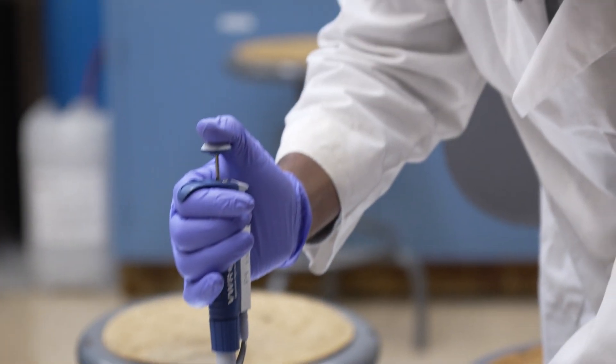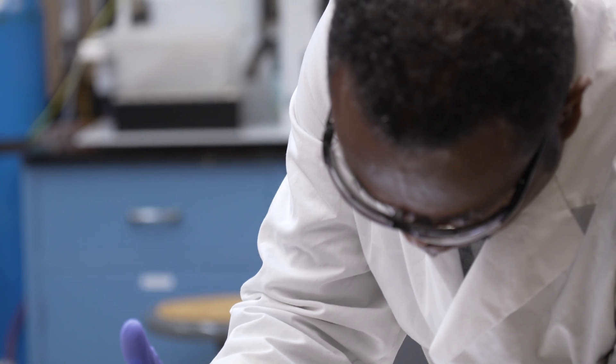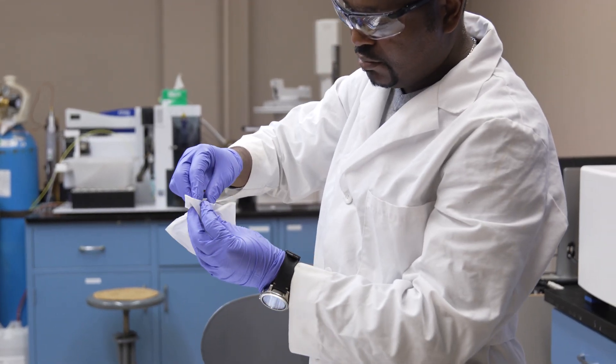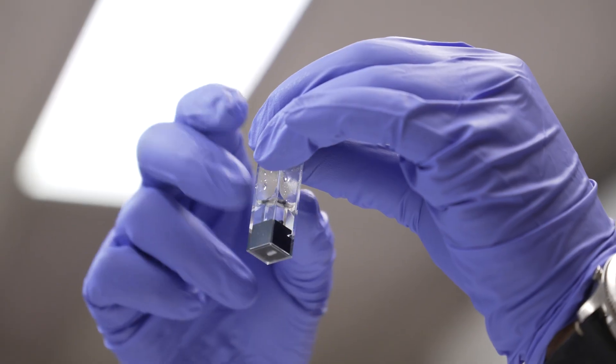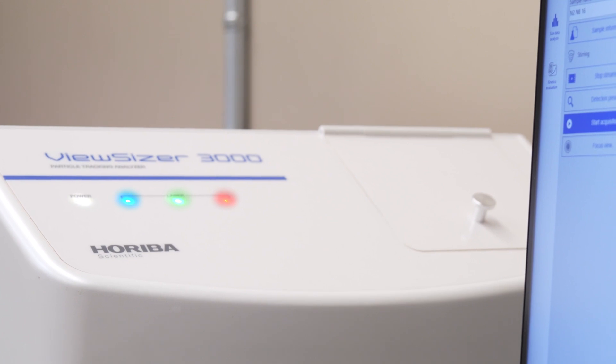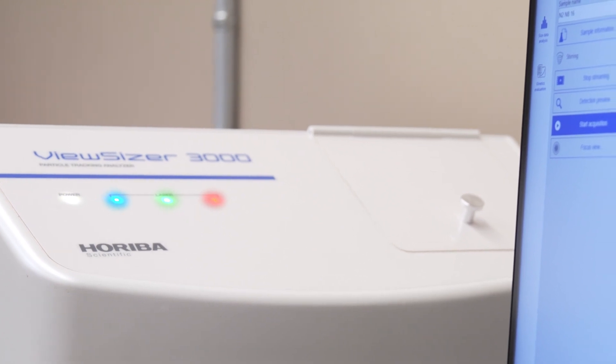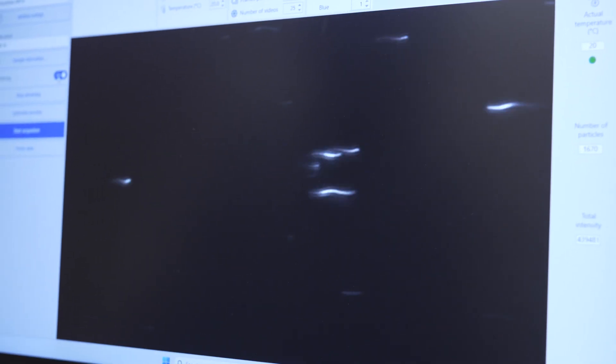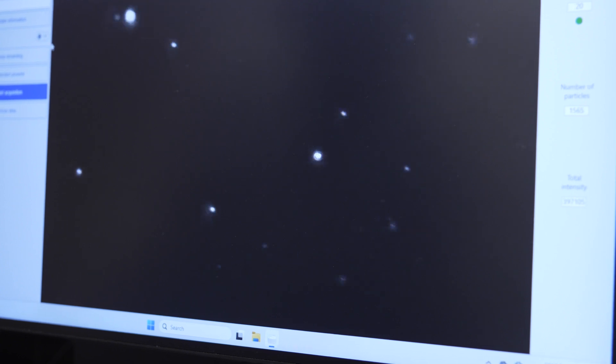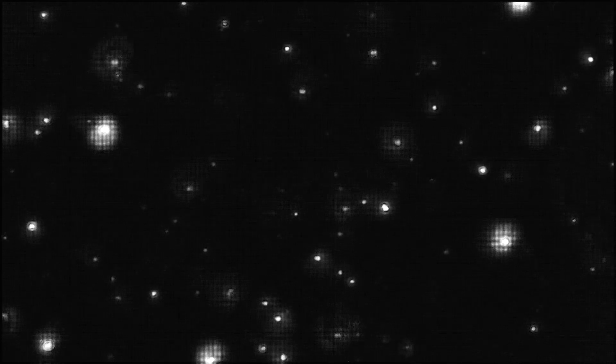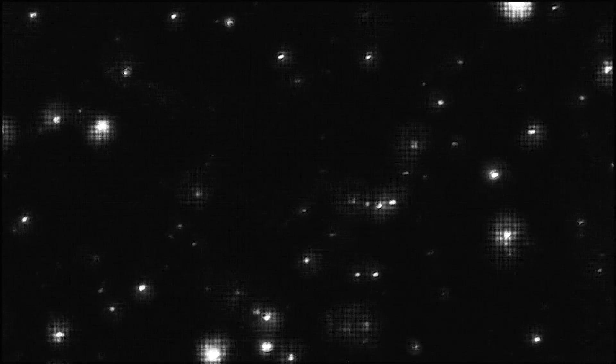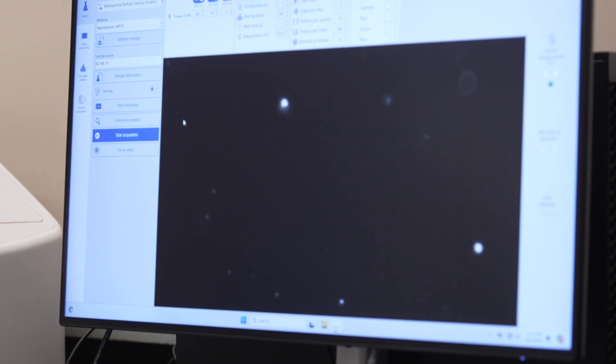So what we're seeing here is similar to what we were doing in the lab where we were shining a laser. So here we have an instrument called nanoparticle tracking analysis. What the instrument is doing is shining three lasers. We need the three lasers to try to highlight the different sizes of bubbles that we have in the solution. And so the nanobubbles are scattering the light.